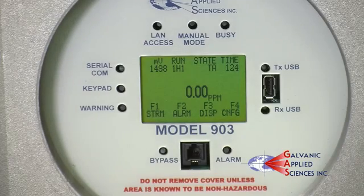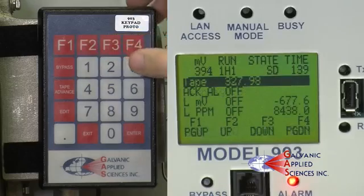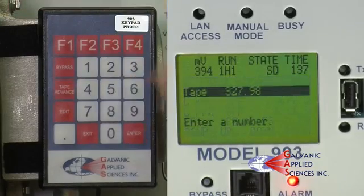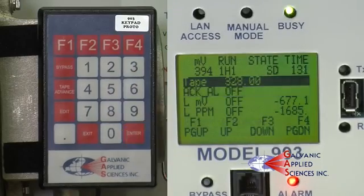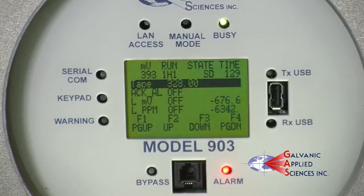Next, reset the tape counter. Press F4 then F1. The first item on the list shows the amount of tape left. To reset this number, press edit and enter the number of feet left, about 328 for a new roll. Press enter then press exit to get to the main menu.